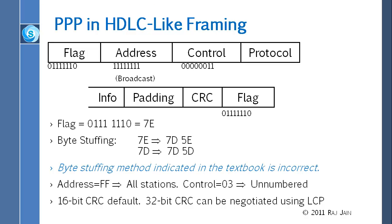A student asks how long 7D and 7E are. Each is a hex character: 7 is 4 bits, E is 4 bits — so each is 8 bits total, one byte. One 8-bit byte is replaced by 16 bits — one byte replaced by two bytes.